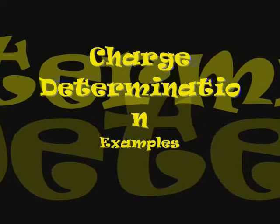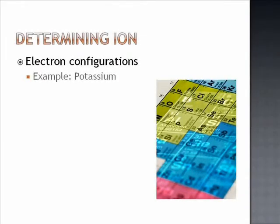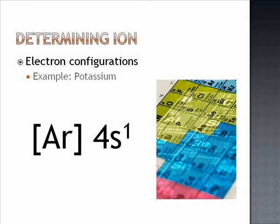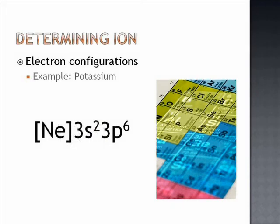Let's look at a couple of examples to illustrate the process. First we will look at a metallic element, potassium. Potassium has an electron configuration of argon 4s1. This shows that it has one valence electron in the 4s orbital. If potassium loses this electron, it will have the same configuration as argon, neon 3s2-3p6.